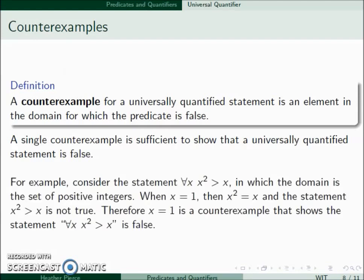For example, let's consider the statement ∀x x² > x where the domain is the set of positive integers. If we consider x = 1, then we have x² = x, so the statement's not true; x² is not greater than x. So x = 1 is a counterexample to show that this statement is false.